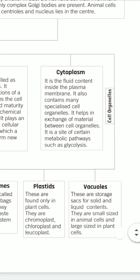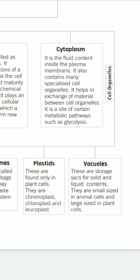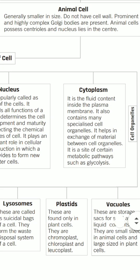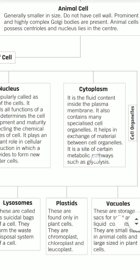Cytoplasm is a fluid contained inside the plasma membrane. It also contains many specialized cell organelles. It helps in exchange of material between cell organelles and is the site of certain metabolic pathways such as glycolysis. Each and every cell has three main parts: plasma membrane, nucleus, and cytoplasm. If it is a plant cell, the cell wall is also part of the structural organization.